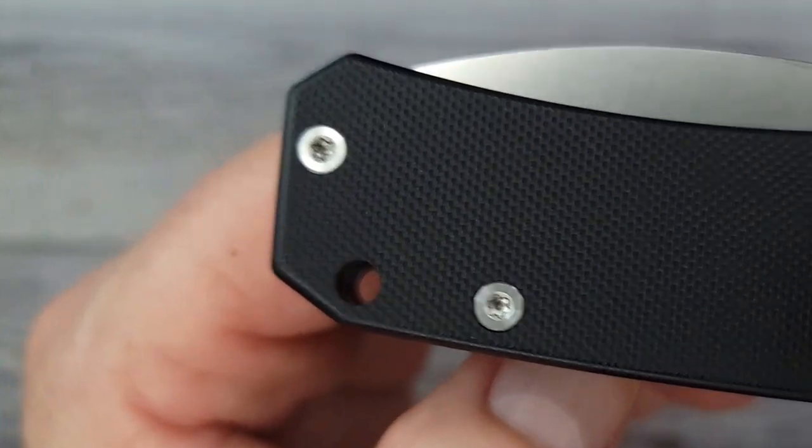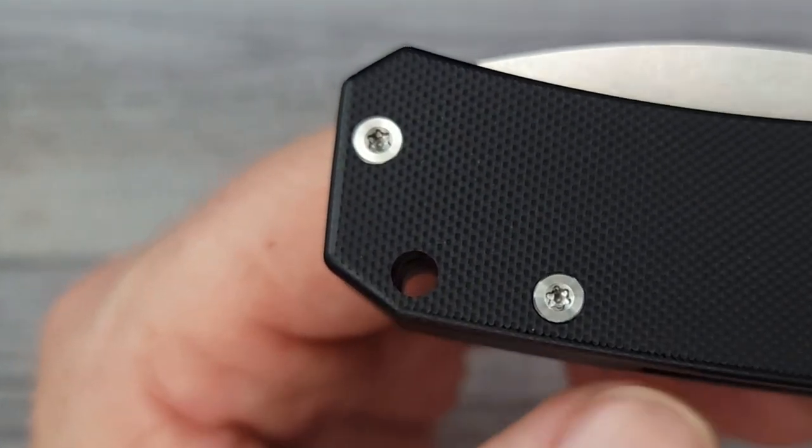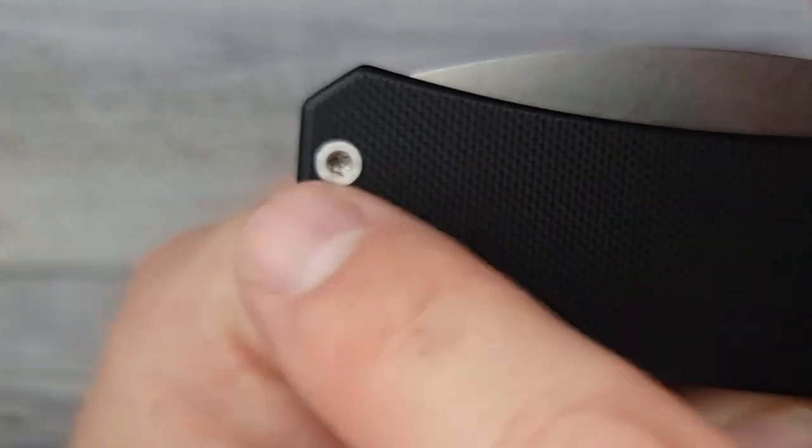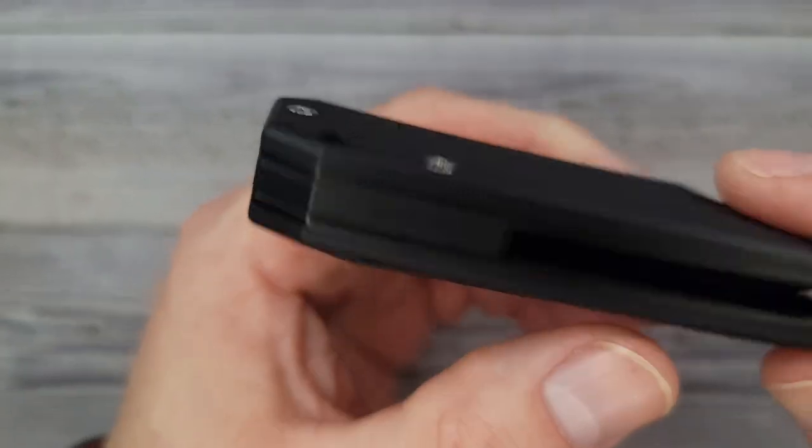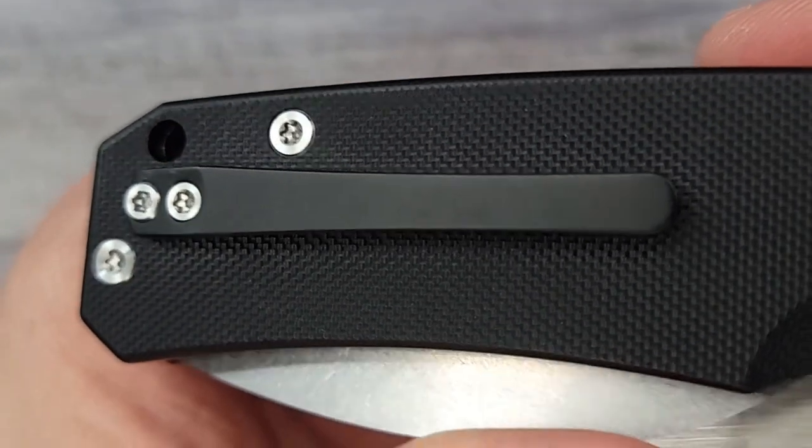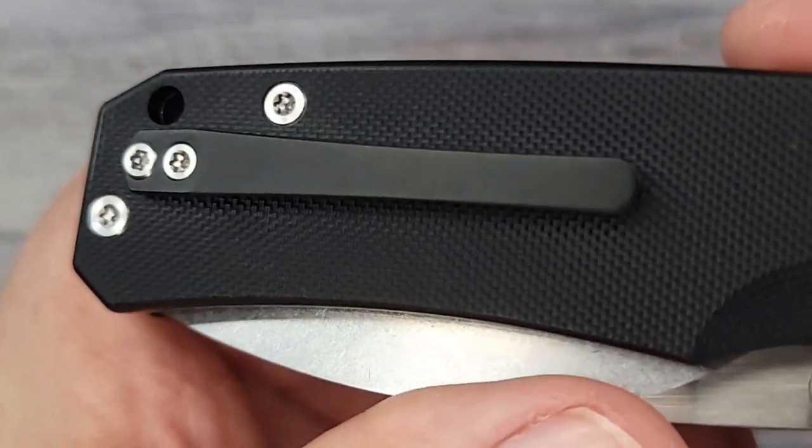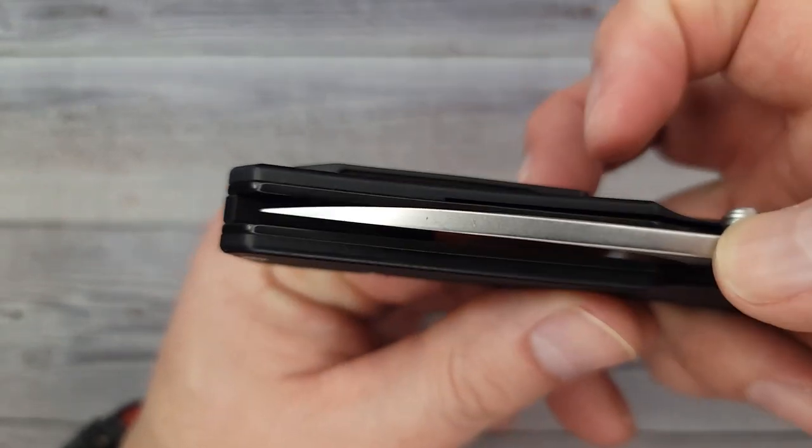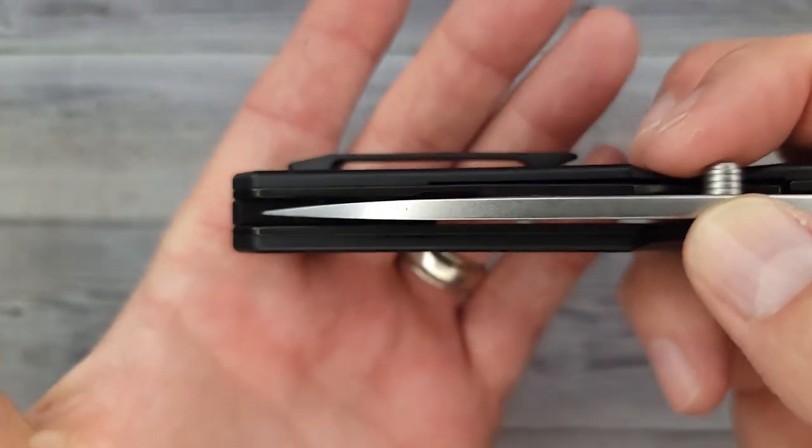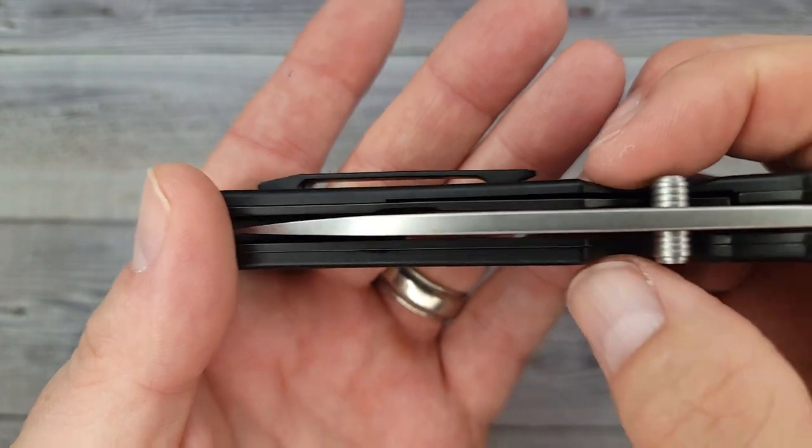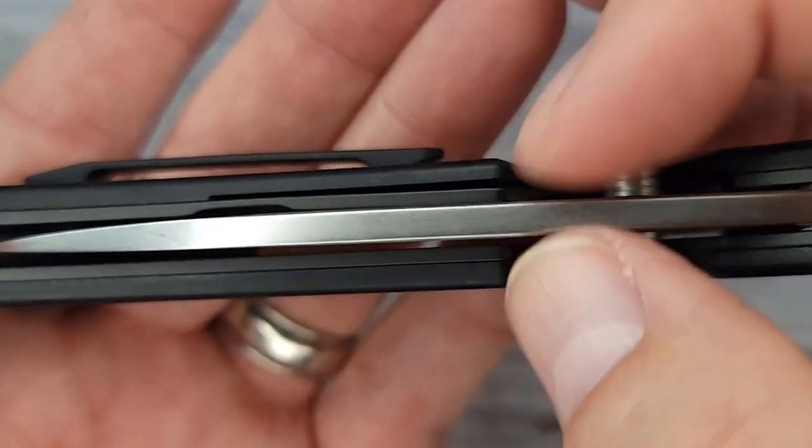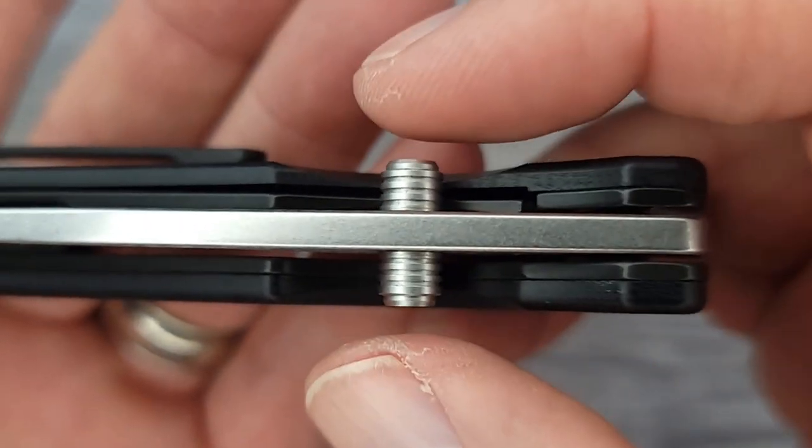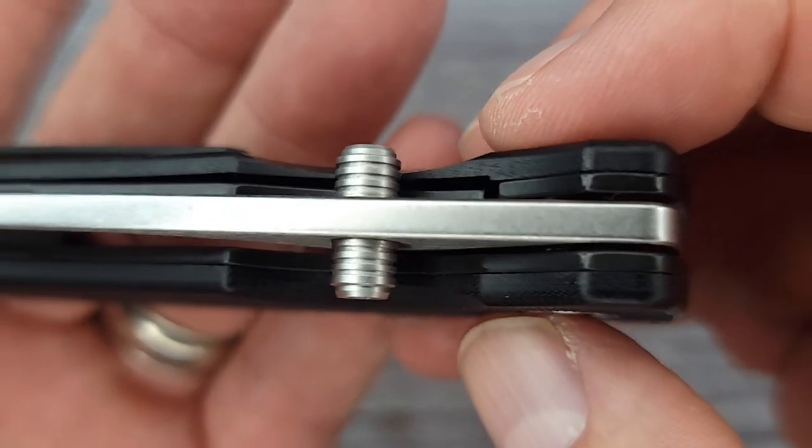Check this out, we have T8 body screws, you have a lanyard hole. It does not have a reversible clip, however the clip that you do get is a titanium alloy which looks very nice. It's nice in and out of the pocket, there's no screws to grab a hold of your pocket. Look at this blade stock - 143 thousandths of an inch, and I really like the look of these thumb studs.